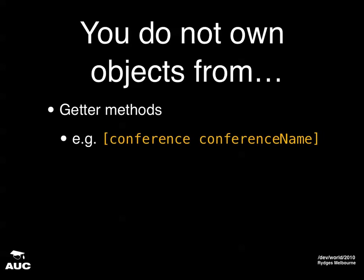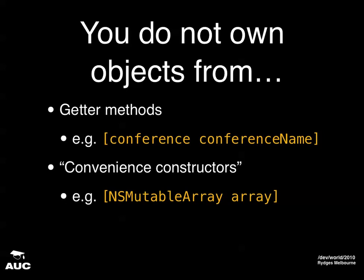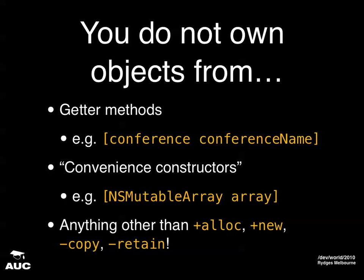Here are some ways NOT to own an object. You don't own objects you get from a getter method — calling a getter like conferenceName returns an object you do not own unless you do something else. Another common way of getting objects is convenience constructors, like sending the array message to NSMutableArray. Again, you don't own that because the method name doesn't contain alloc, copy, new, or retain. Remember that list of names that create ownership, and if it doesn't come from one of those, don't release it.